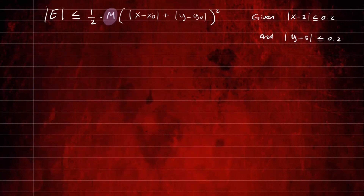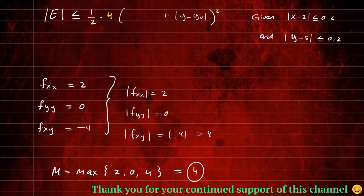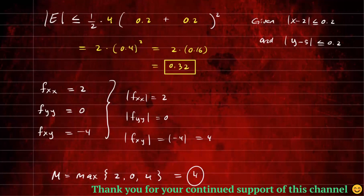Once we figure out M, it's just a matter of plugging into our formula. M = 4, and we know |x - x₀| ≤ 0.2 and |y - y₀| ≤ 0.2. So the error bound is (1/2)(4)(0.2 + 0.2)², which is 2 times (0.4)² = 2 times 0.16 = 0.32. So the magnitude of our error is less than or equal to 0.32.